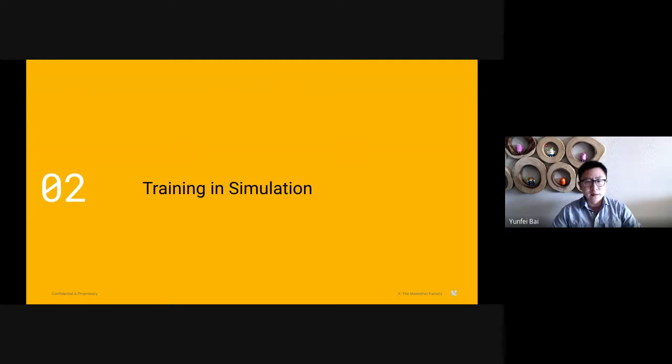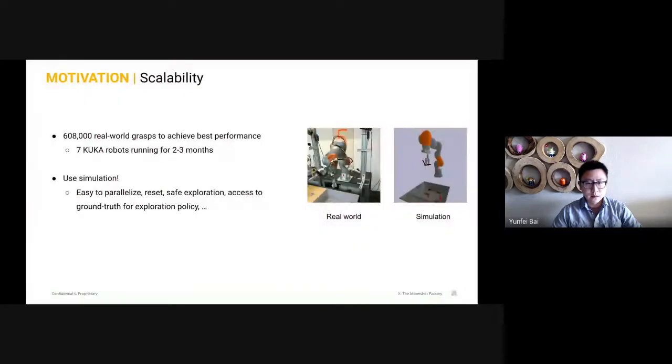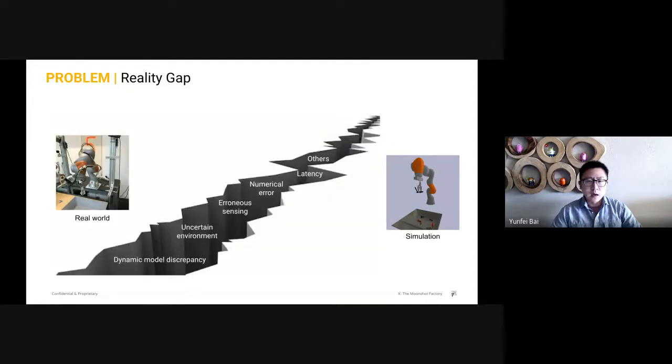So the next question is, can we leverage simulation to reduce the amount of real-world trials and the data collection time? In the previous project, we need 600,000 real-robot grasps for training, and it took us three months to collect this amount of data on seven robots. You think simulation can collect the data much faster, since it's easy to parallel, and we have ground truth. However, the model training in sim doesn't transfer to the real robot directly because of the reality gap.